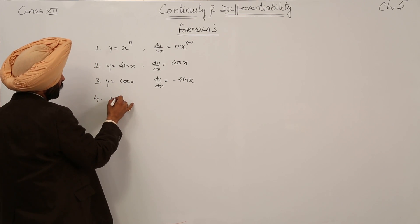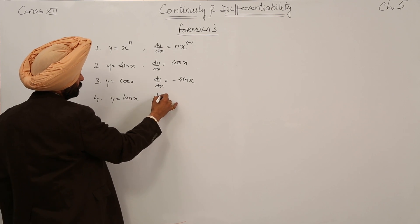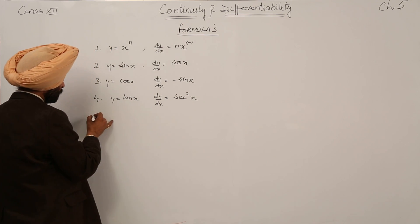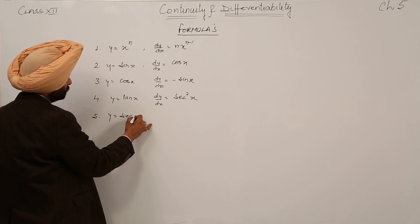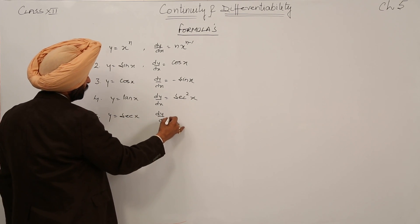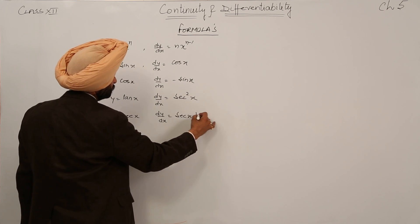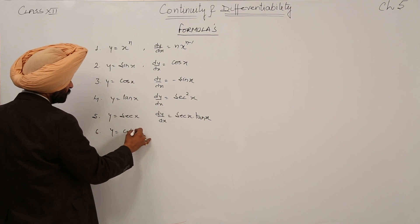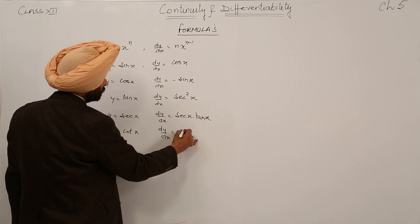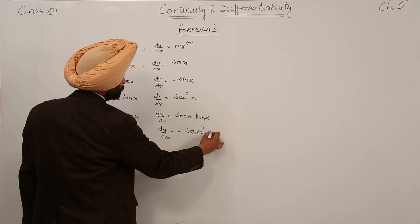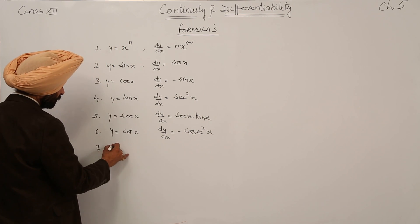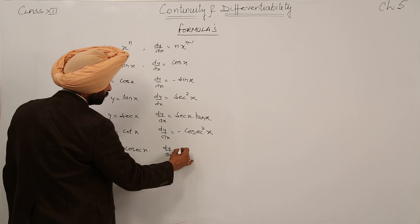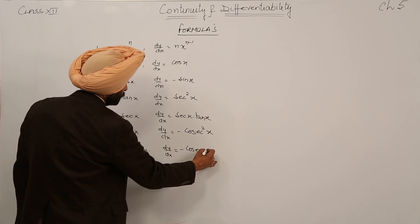Number 3: y is equal to cos x, dy/dx is equal to minus sin x. Number 4: y is equal to tan x, dy/dx is equal to secant squared x. Number 5: y is equal to secant x, dy/dx is equal to secant x times tan x. Number 6: y is equal to cot x, dy/dx is equal to minus cosecant squared x. Number 7: y is equal to cosecant x, dy/dx is equal to minus cosecant x times cot x.